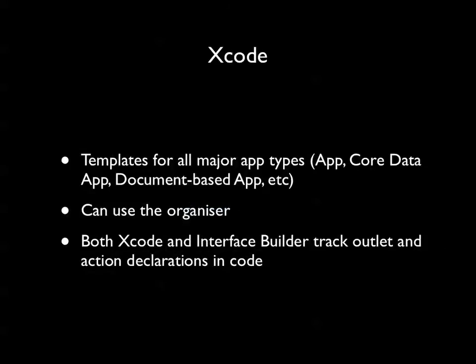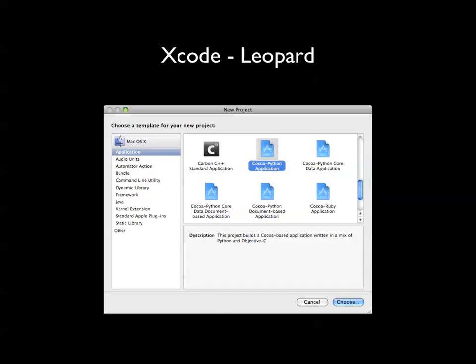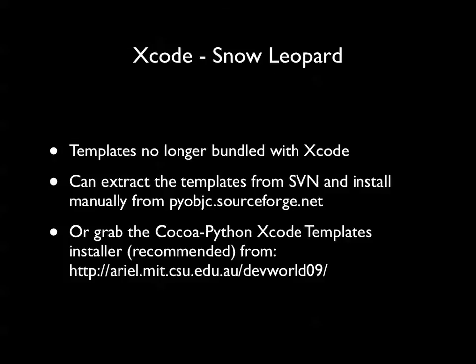The Cocoa Python templates are included in Xcode for a normal application, a Core Data application, a document-based application, and so on. You can use Xcode's built-in organizer, and it will work with Cocoa Python applications as well. Both Xcode and Interface Builder can track outlets and actions without a problem. Creating a Cocoa Python project in Xcode is very easy — under Leopard, just go File > New Project and under Applications select Cocoa Python Application. Under Snow Leopard it's a bit different because Apple removed the Cocoa Python templates. Don't interpret that as it no longer being supported — it still is, you just have to install the templates manually.